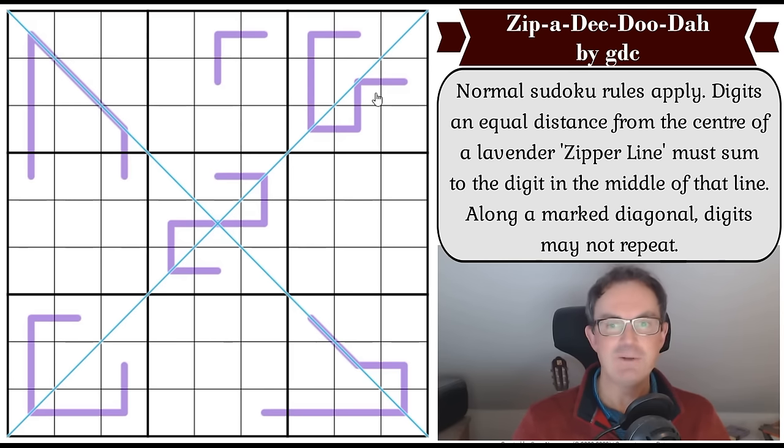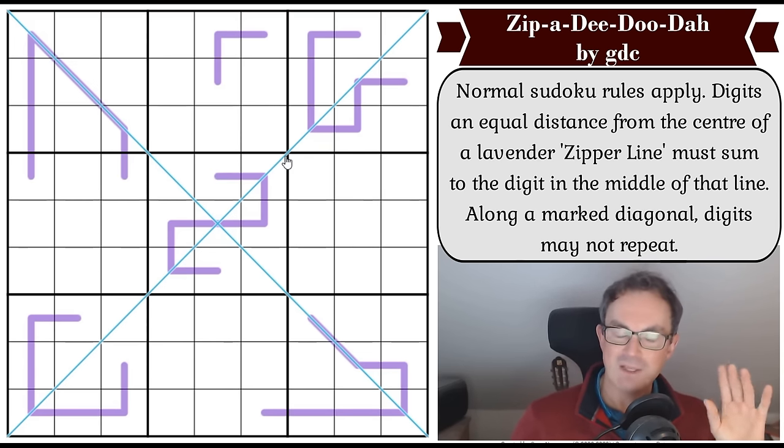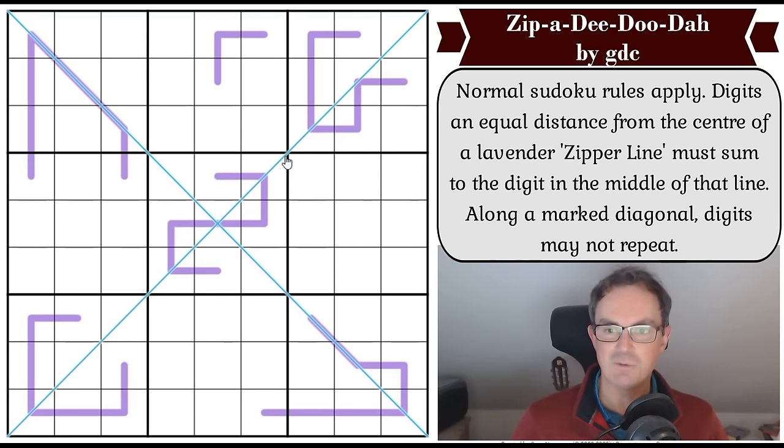It has one star for difficulty on Logic Masters Germany. It's called Zippity Doodah and it's by GDC, who is a constructor that I have massive respect for. Basically every single GDC puzzle is a miniature masterpiece, and this one has been recommended to us a lot.